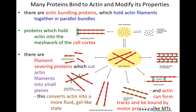Actin is very, very versatile. Actin can make many different types of structures used for many different types of cellular activities, and which structures actin assumes depends solely on the accessory proteins which bind to it, rather than the actin filaments themselves. We're going to go through each of these examples in more detail, starting with the cell cortex.